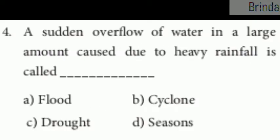Fourth question: a sudden overflow of water in a large amount caused due to heavy rainfall is called dash. Your options are flood, cyclone, drought, seasons. The answer is flood.